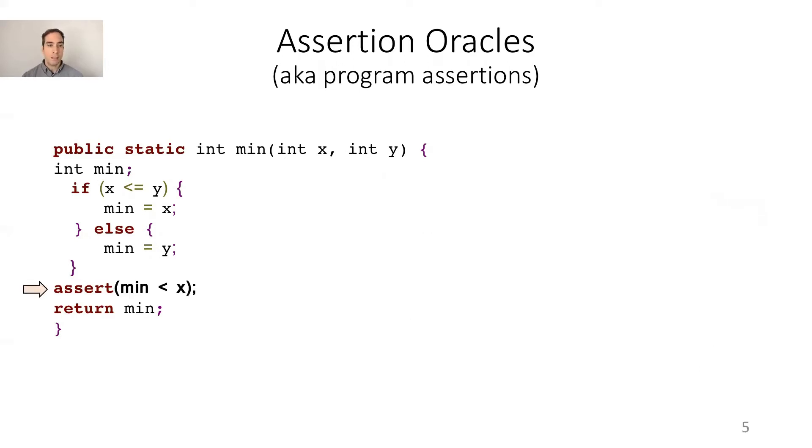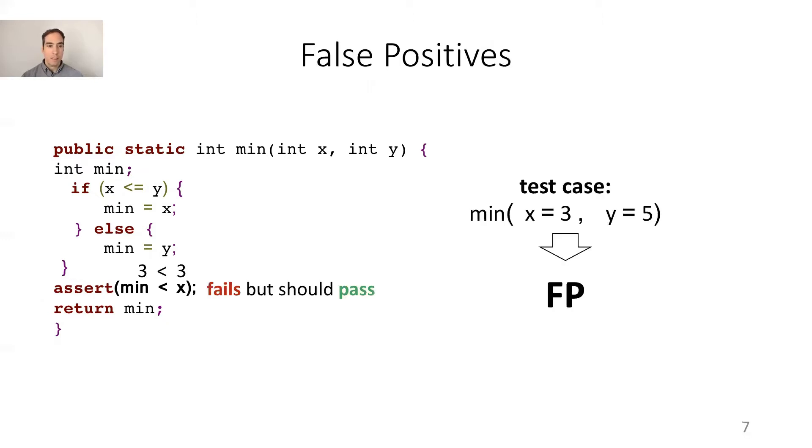Let's see an example of false positives and false negatives. This is a simple Java method that returns the minimum between two numbers x and y. The assertion min less than x has both false positives and false negatives. An example of false positive is the program state obtained when executing this test case with x equal to 3 and y equal to 5. Since 3 is not smaller than 3, min is not less than x, the assertion fails but should pass.